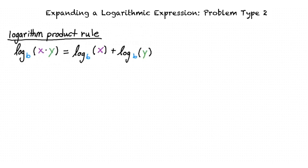The logarithm product rule says that the base b logarithm of x times y is equal to the base b logarithm of x plus the base b logarithm of y.